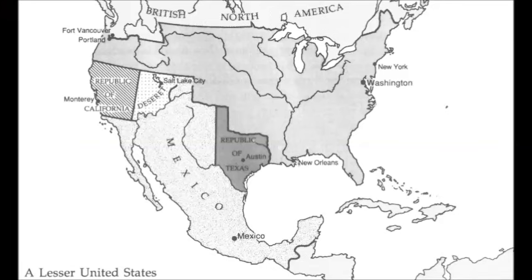Hello everyone, I'm Matt Mitrovich, the Alternate Historian. It's time again to analyze another alternate history map, except this one was made by a professional historian. This is 'A Lesser United States' from Donald Meinig's four-volume magnum opus, 'The Shaping of America: A Geographical Perspective on 500 Years of History.'